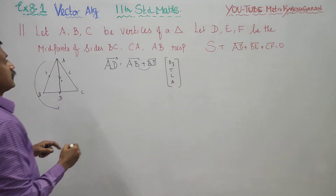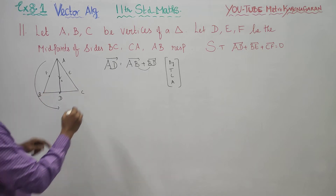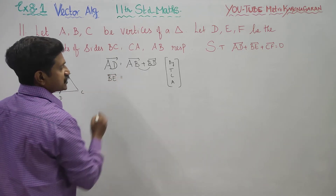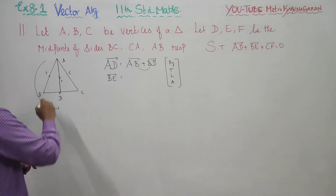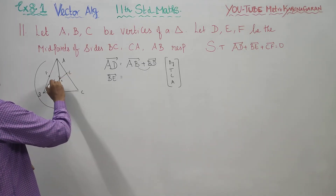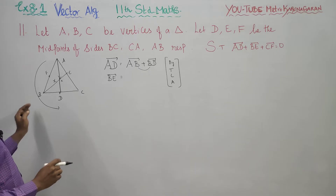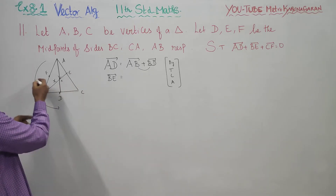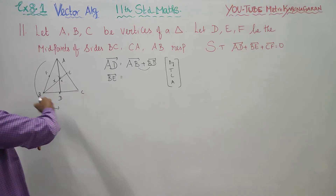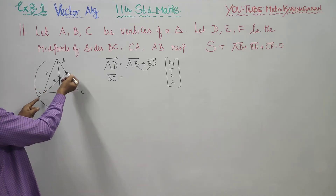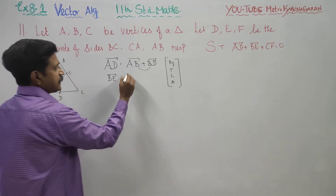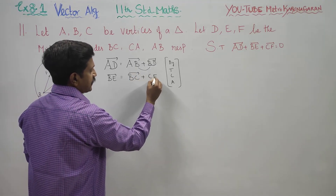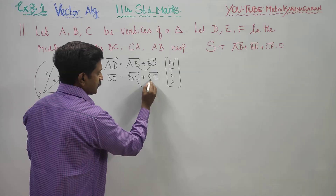Then, for the BE vector: BE equals BC plus CE, using the Triangle Law of Addition. The direction is the same direction — from B toward C to point E.